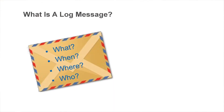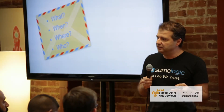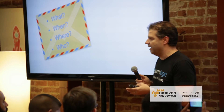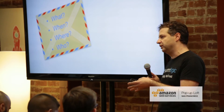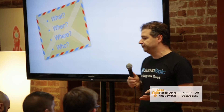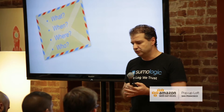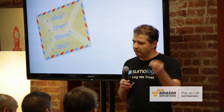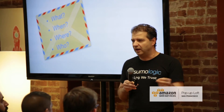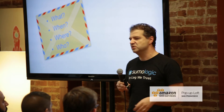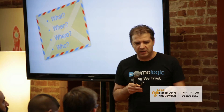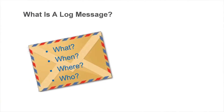What is a log message? Some of you here may be developers, others may not be, so I'll give you the rundown. A log line is a message written by a machine, infrastructure component, or an application that tells you what happened, when it happened, where it happened, and maybe who did it. So it's an event — somebody processed a transaction, somebody logged into a server, or an exception that came from your code.